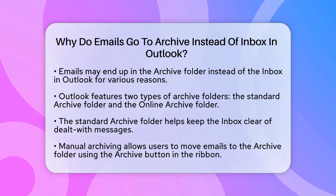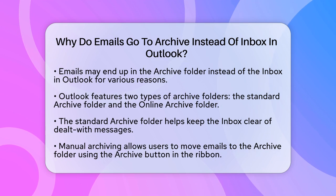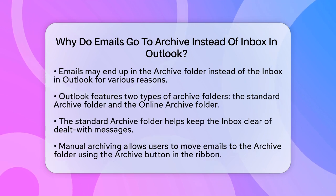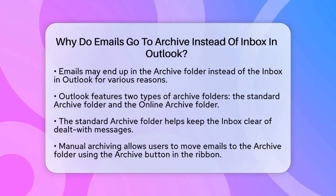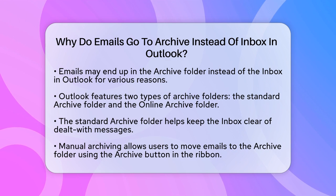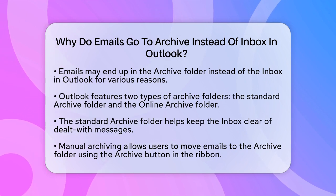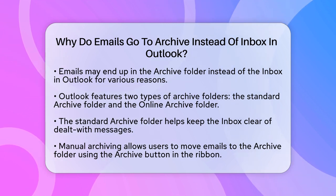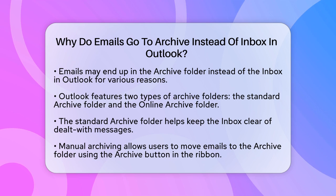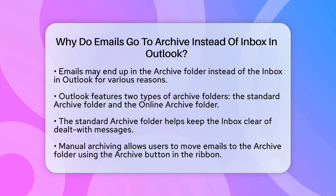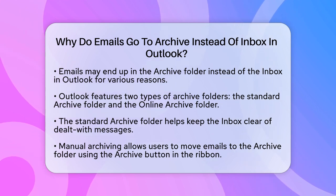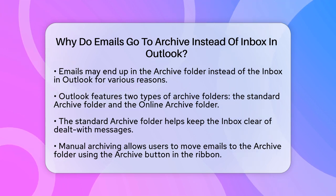First, it's important to understand that Outlook has two types of archive folders: the Standard Archive folder and the Online Archive folder. The Standard Archive folder is one of Outlook's default folders, similar to your Inbox, Sent Items, and Deleted Items folders. This folder is designed to help you keep your inbox clear of messages you've already dealt with.